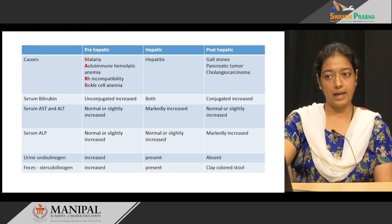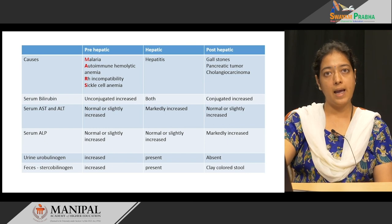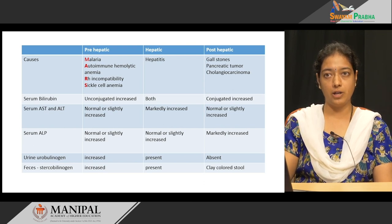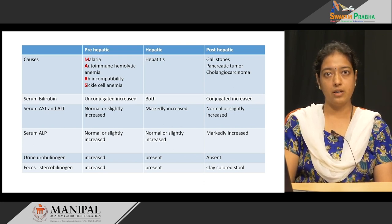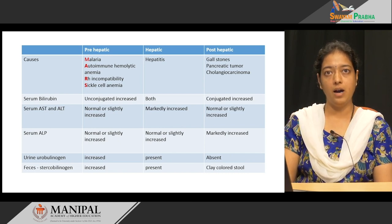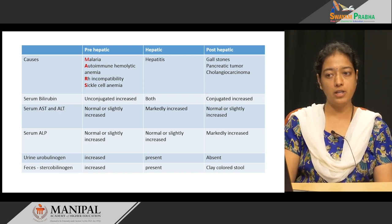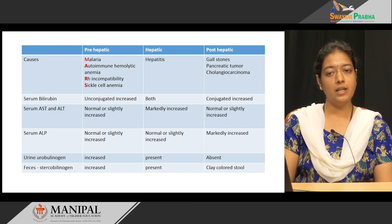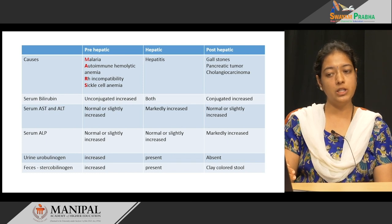In adults, there are three types of jaundice: pre-hepatic or hemolytic jaundice, hepatic jaundice, and post-hepatic or obstructive jaundice. In pre-hepatic jaundice, causes are remembered by the mnemonic MARS — malaria, autoimmune hemolytic anemia, Rh incompatibility, and sickle cell anemia. Unconjugated bilirubin is increased, liver enzymes are normal, and urine urobilinogen and fecal stercobilinogen are elevated.